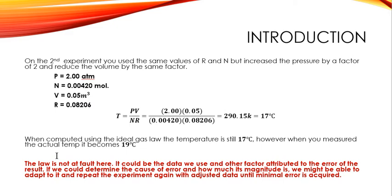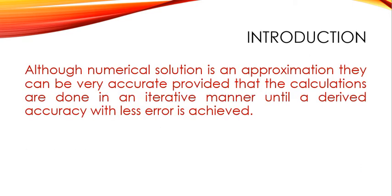But note, that since the ideal gas law is a law and have been proven correct by countless computation and experiment, it is for sure that the ideal gas law is not at fault here. So, it could be the data we use and other factors attributed to the error of the result. So, if we could determine the cost of the error and how much its magnitude is, we might be able to adapt to it and repeat the experiment again and again with just the data until the minimal error is acquired. That is basically what computational analysis or numerical analysis is.